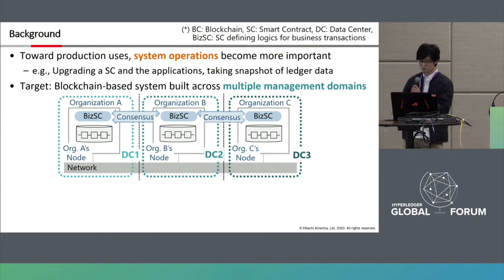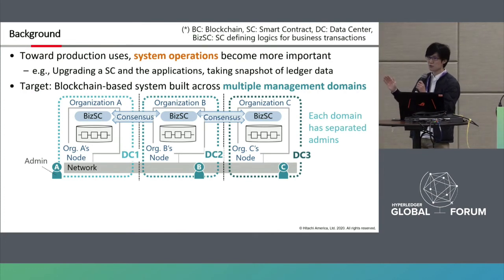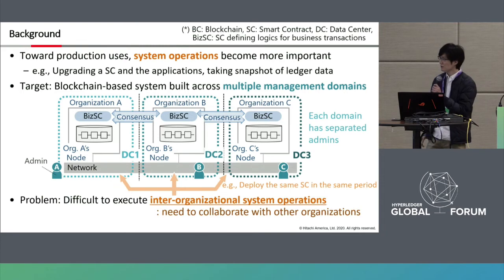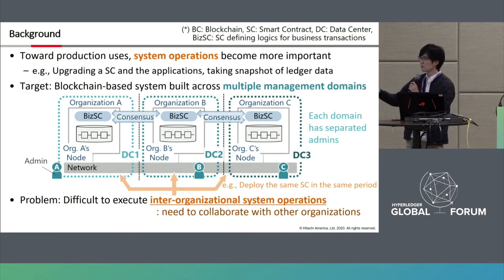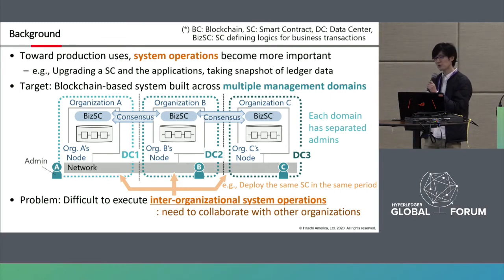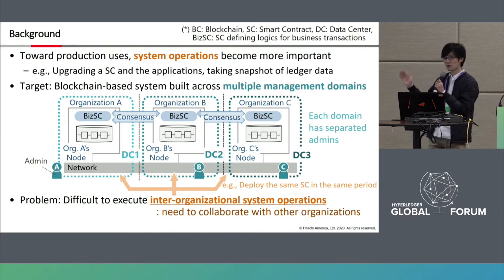Each domain has separated administrators. This system configuration makes it difficult to execute inter-organizational system operations that need to collaborate with other organizations — for example, deploying the same smart contract over the blockchain network. This type of operation is specialized for blockchain-based systems, and we believe it is a common problem, not just for Hyperledger Fabric.